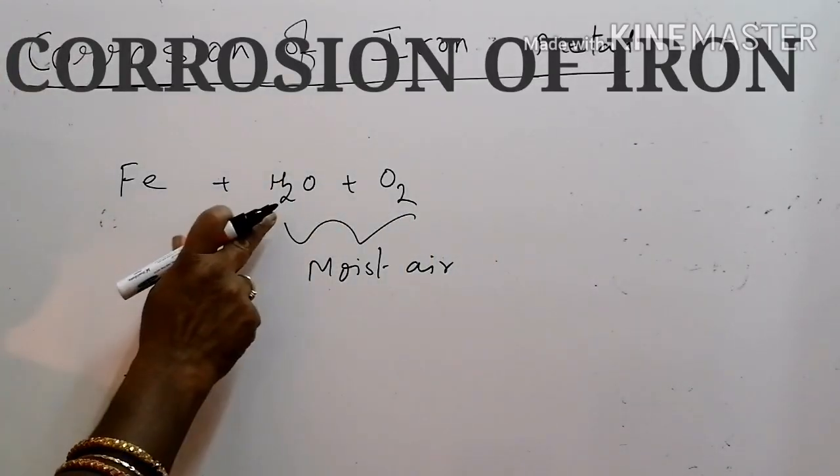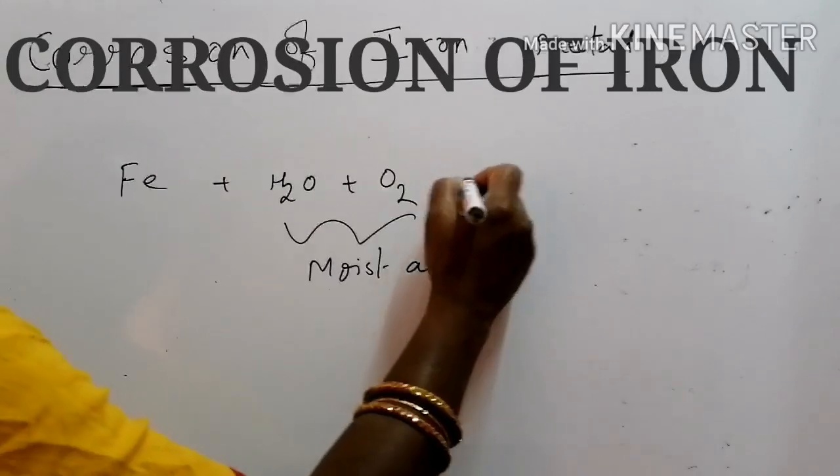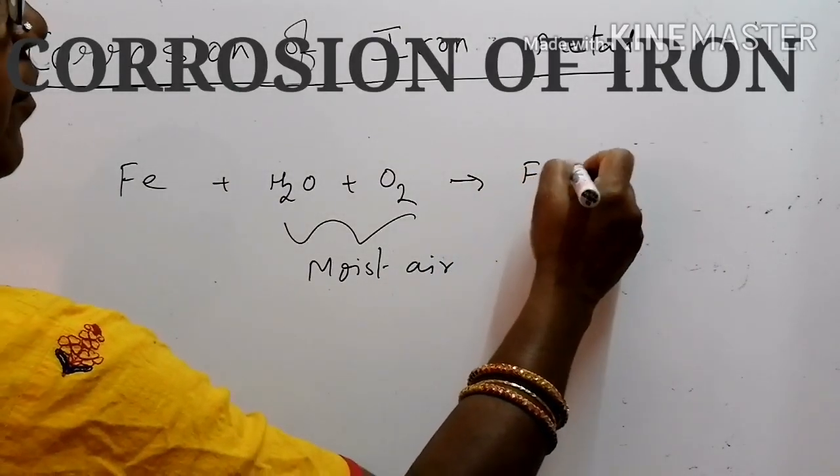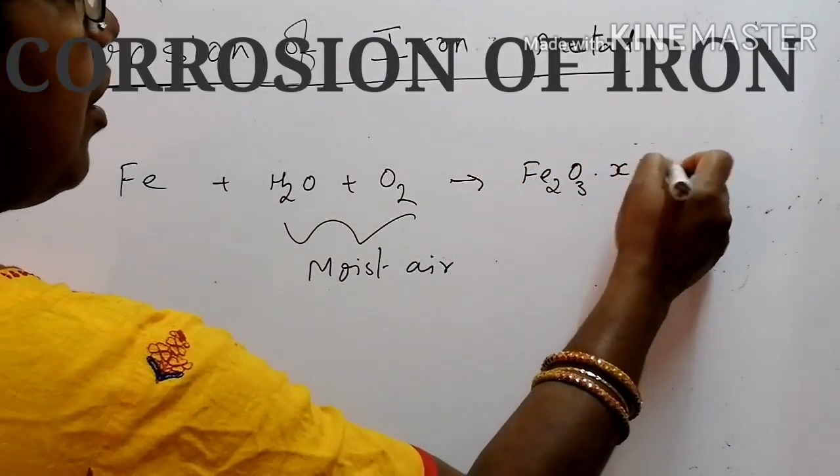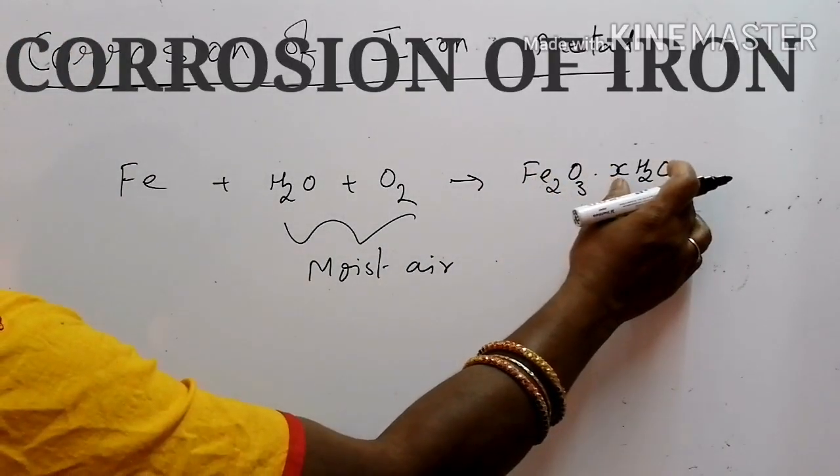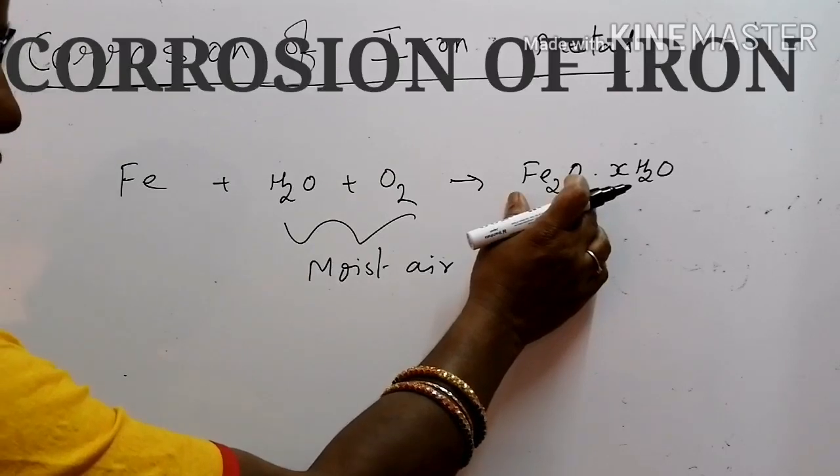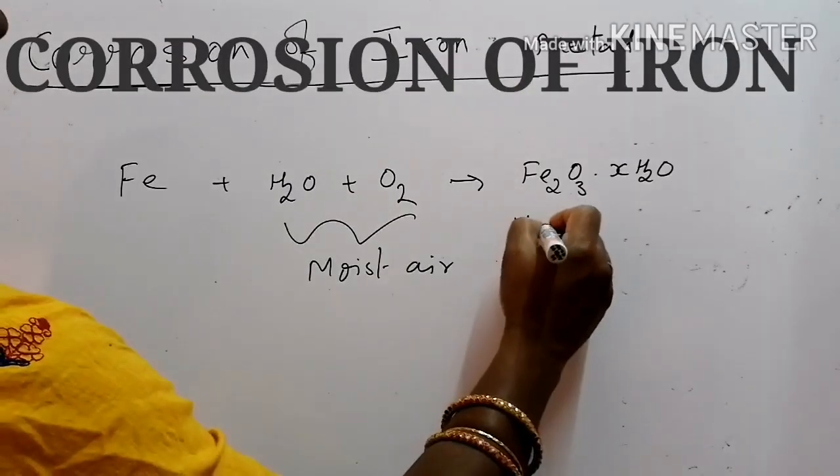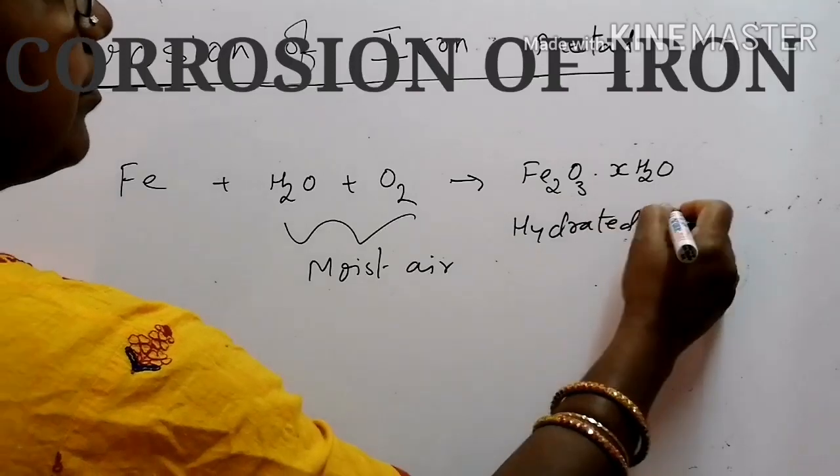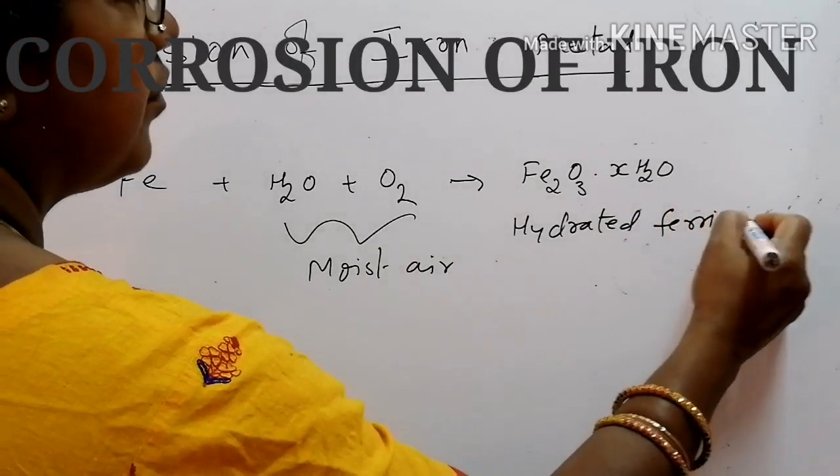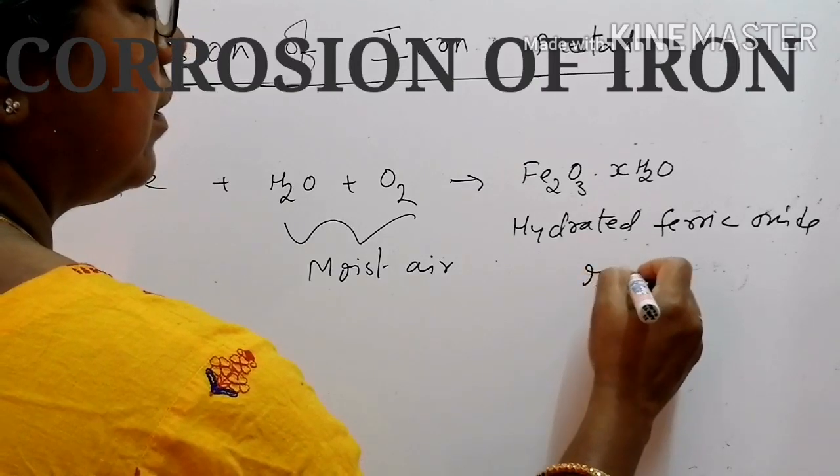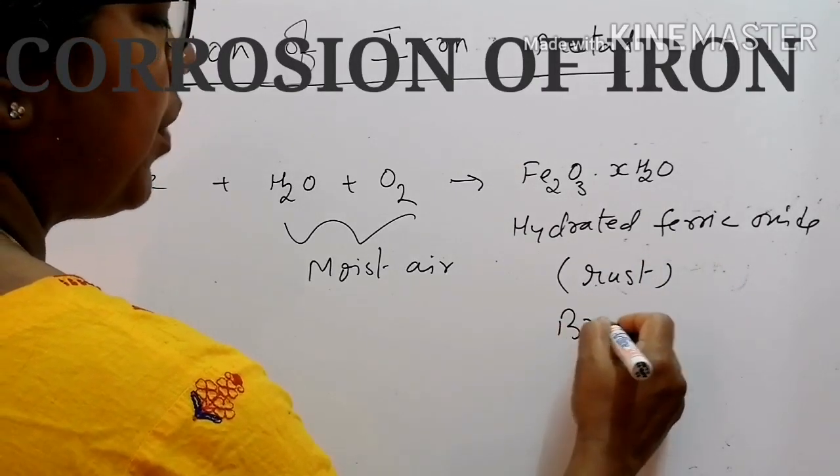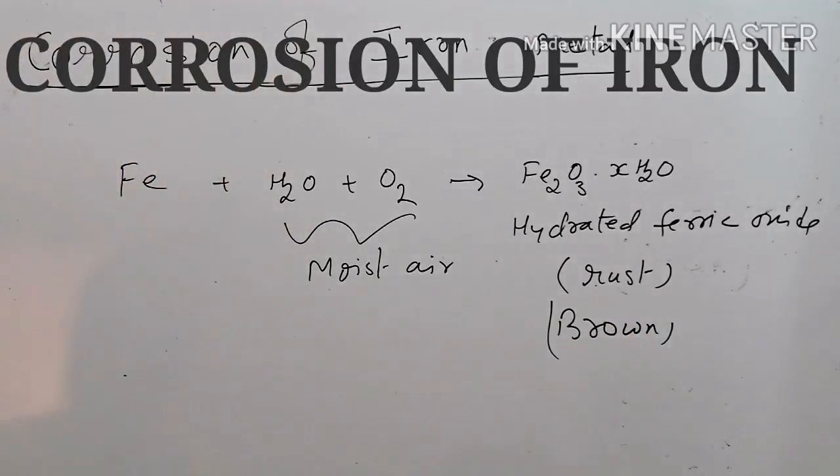When iron comes in contact with moisture, the formation of hydrated ferric oxide. Here, hydrated stands for water molecule ferric oxide Fe2O3. X stands for the indefinite number of water molecules. This hydrated ferric oxide is called rust which is brown in color, which we can see in our daily life.